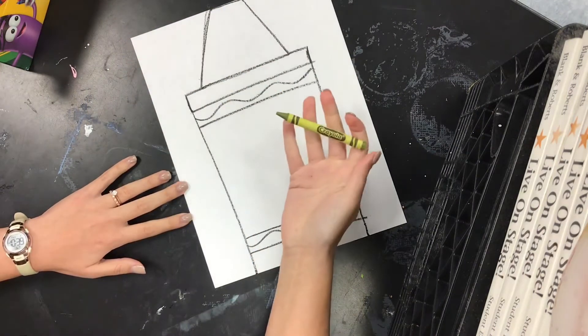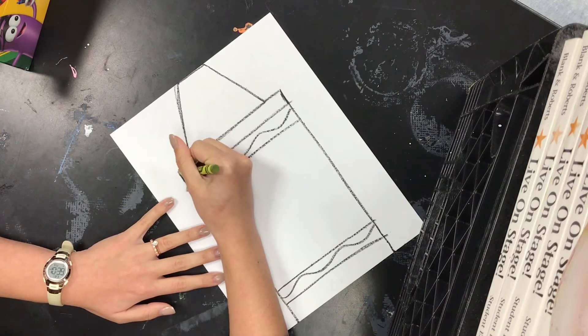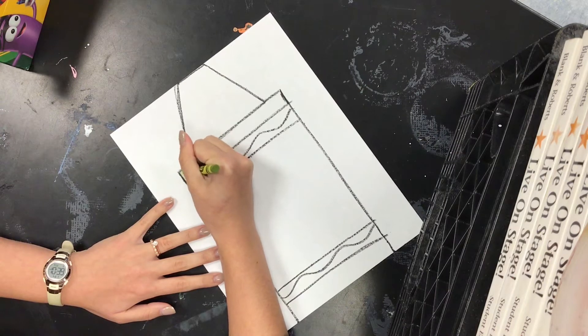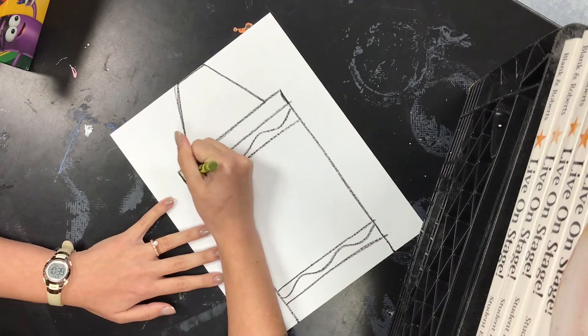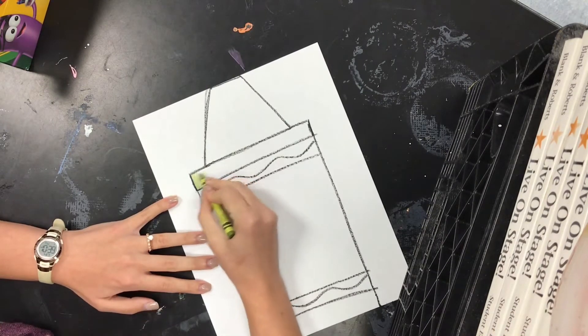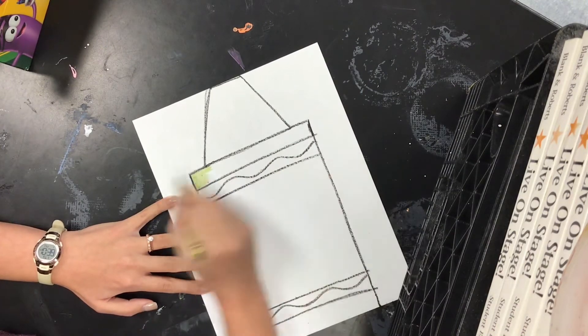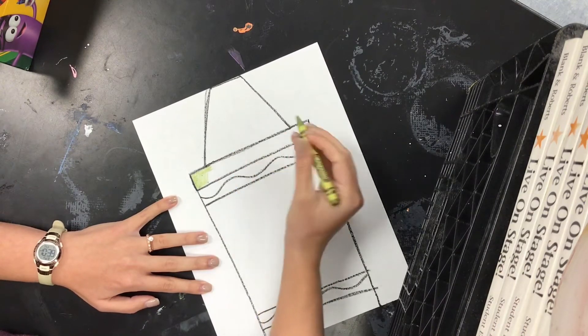So these are All About Me crayons, so I want you to color your crayon with your favorite color. I'm going to color small and start to fill in my crayon. My favorite color is olive green. I always wear it. I have so many things that are olive green, so I'm pretty sure my All About Me crayon needs to be olive green.